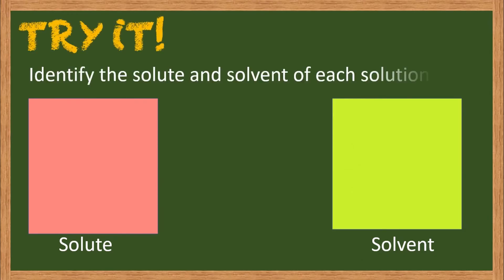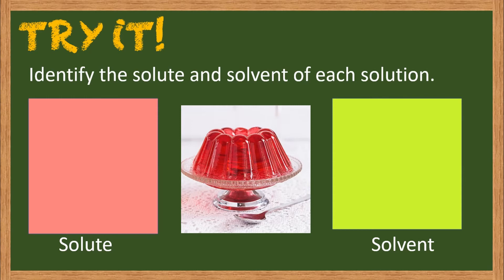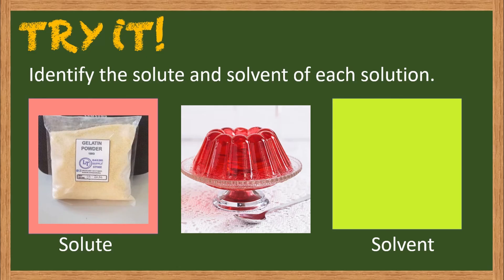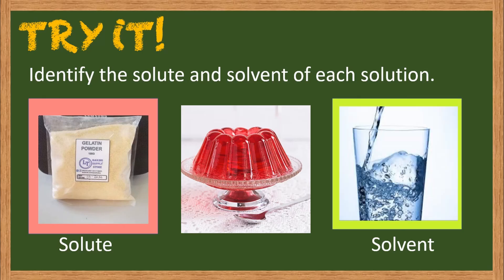Now let us try to identify the solute and solvent of a solution. We have gelatin here — what are the solute and solvent needed to make gelatin? Think of the two ingredients. For the solvent we need water, and water plus gelatin powder will make a gelatin or jello.